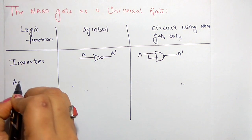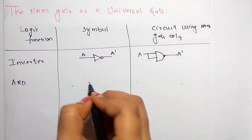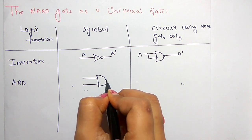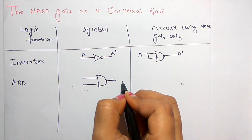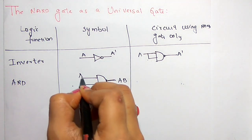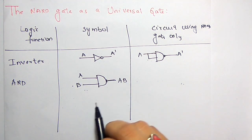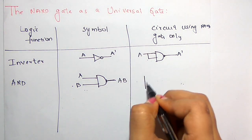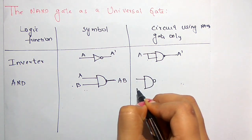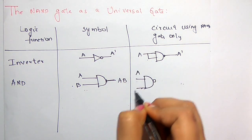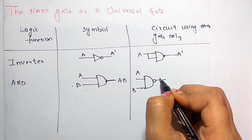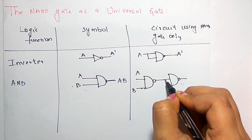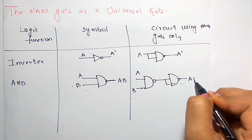Next is the AND logic function. The symbol shows inputs A and B with output AB. To get the AND function from NAND gates, if you take a NAND gate with inputs A and B you will get AB bar. If you then feed that output into one more NAND gate, it will become AB.